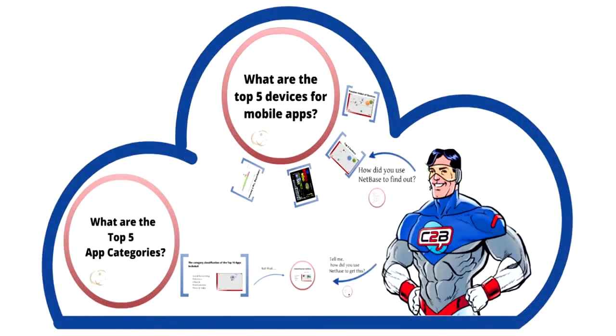As we get started, we needed to look at a couple of different things to determine what this next killer app was going to be. One of those things: what are the top five devices for mobile apps? If you're looking to start an app, you really need to know what device you're going to put it on and what platform you need to develop it in. We also needed to look at what are the top five app categories — which is the easiest category to get into, and where is there a need?